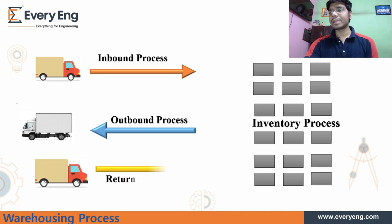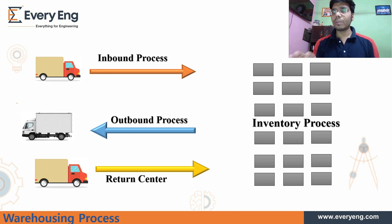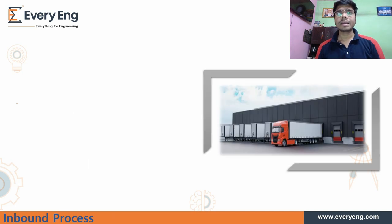The fourth process is the return center. Whenever a product goes to end users and the user denies or returns the product, it comes into the return center process. So the four warehouse processes are: first, inbound process; second, inventory process; third, outbound process; and fourth, return center.